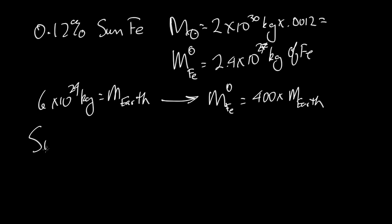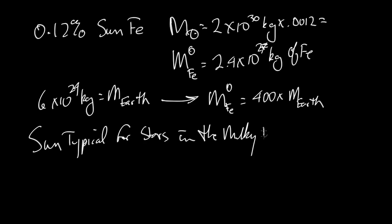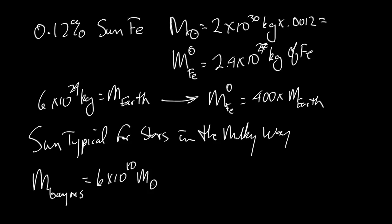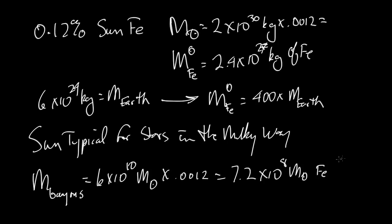We believe the Sun is typical for stars in the Milky Way. So let's consider how much iron we have to create to fill the Milky Way and all the stars that have iron in our galaxy. The mass of baryons of the Milky Way is approximately 6×10¹⁰ solar masses. We know that 0.12% of that is iron, and so we need to have about 7.2×10⁸ solar masses of iron in the Milky Way.